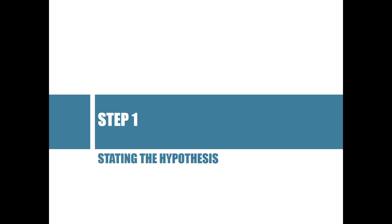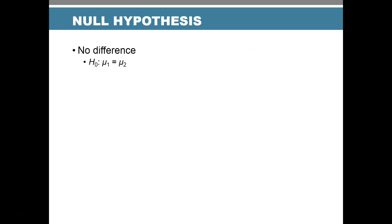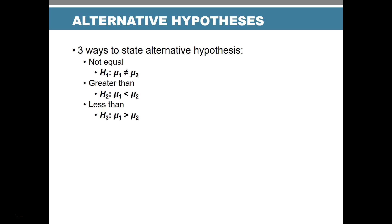Step one: state our hypothesis. The null hypothesis is that there's no difference. The alternative has three possible forms, and whether we choose directional or non-directional depends on what we're studying — it's a conceptual decision.